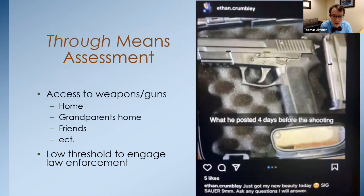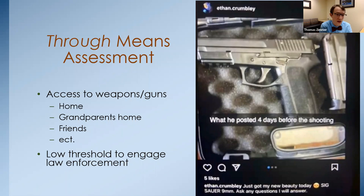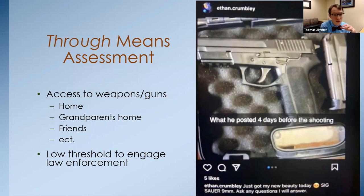A thorough means assessment is vital — something somewhat lacking in the Oxford case. This isn't just 'are there guns in the home?' It means also asking whether grandparents have guns, whether they have access through friends, whether they hunt or are on the skeet team — being exhaustive about what means the person could access. This is another place it may make sense to engage law enforcement, especially if you're not confident the parents are reliable. Law enforcement can go into the home and be more convincing than we are.